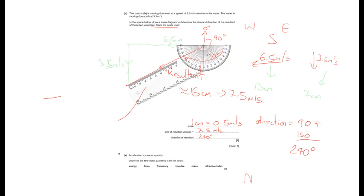Question 2, part A: acceleration is a vector quantity. Underline the two vector quantities from the list. This is a recap — if it's a vector it must have magnitude and direction. Of the options, force and impulse both have direction.